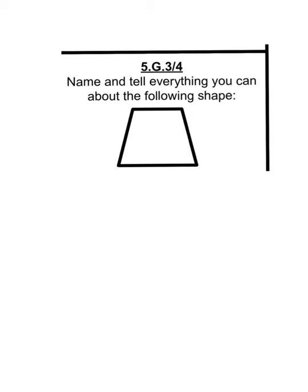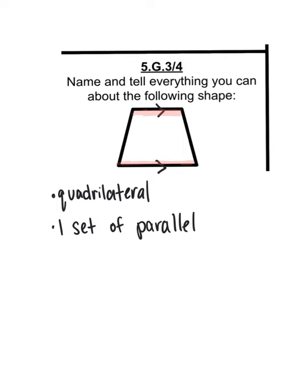Name and tell everything you can about the following shape. So they want you to make statements about what you notice about this shape. First of all, how many sides does it have? It has four sides. One, two, three, four. And what do we call shapes that have four sides? It's a quadrilateral. What else do we notice about it? What do we call these two sides where they run side by side and they never move closer together or further apart and they don't intersect ever? They're always the same distance apart. We call those parallel lines.